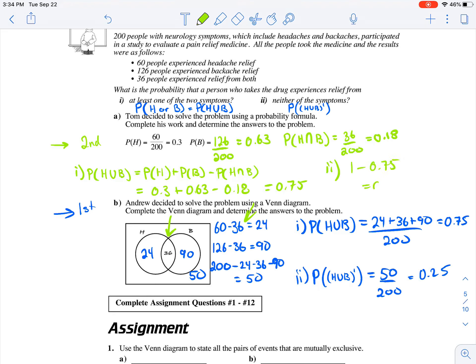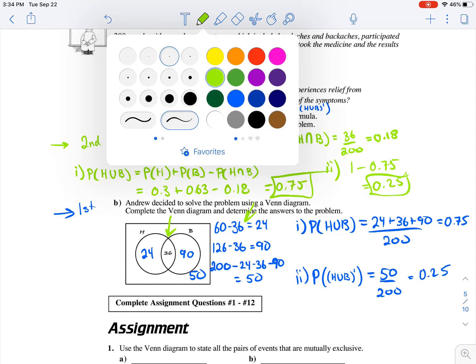Now the second part, they're complementary events, so I'm just going to take one, subtract out 0.75, and we're left with 0.25.